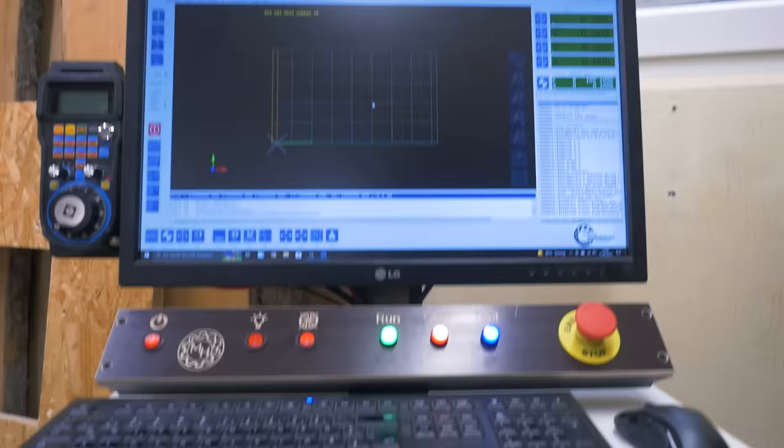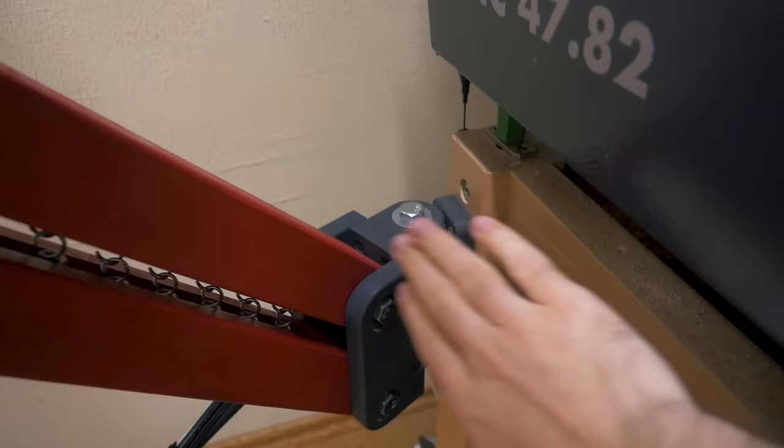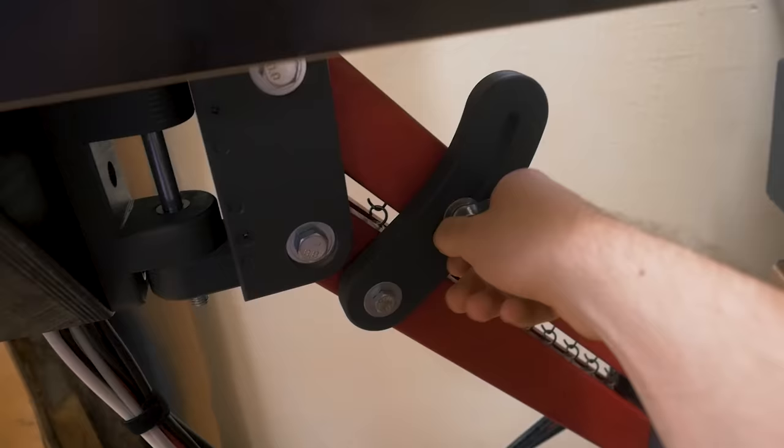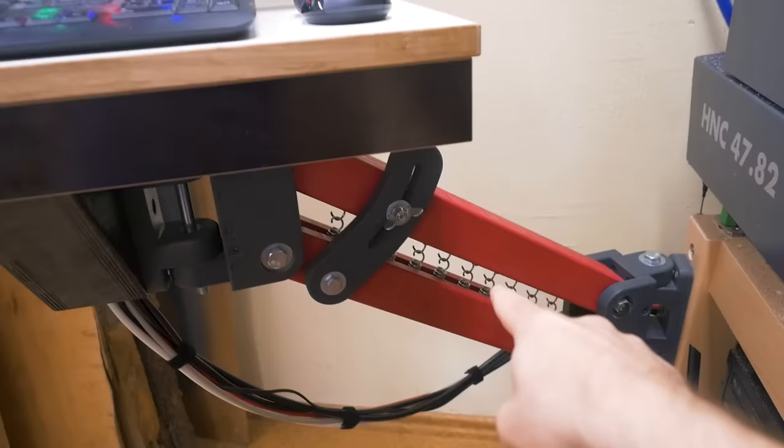This setup uses a parallelogram mechanism for the height adjustment, mounted to the side of the machine base where it can swivel and rotate. The height is secured with this clamping bracket, and when I open this, the weight is held in place by a bunch of springs which prevent it from just crashing down.